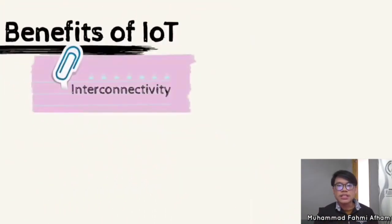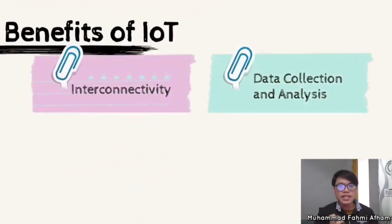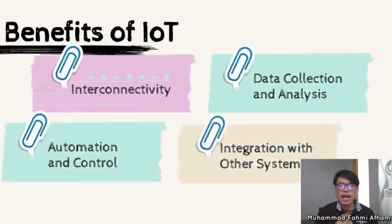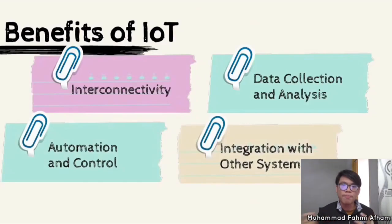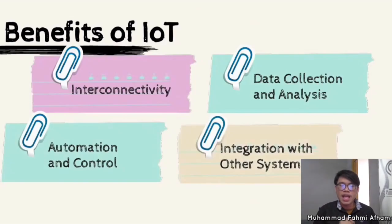Moving on to the benefits of IoT — the Internet of Things, which refers to a network of physical objects embedded with sensors, software, and other technologies for connecting and exchanging data. First, interconnectivity: IoT devices can connect to the Internet and to each other, allowing transfer and receipt of data. Second, data collection and analysis: IoT sensors collect data that can be analyzed to monitor systems, improve performance, or predict maintenance needs. Third, automation and control: IoT devices can be automated or controlled remotely for efficient operation. Finally, integration with other systems: IoT devices integrate seamlessly with existing Internet infrastructure, enhancing overall functionality.